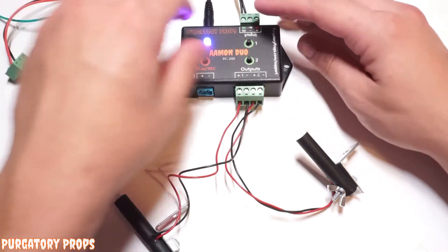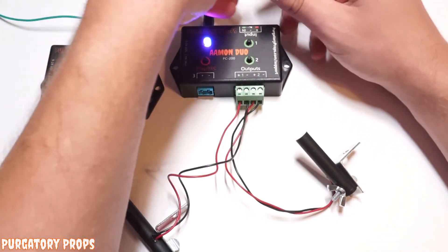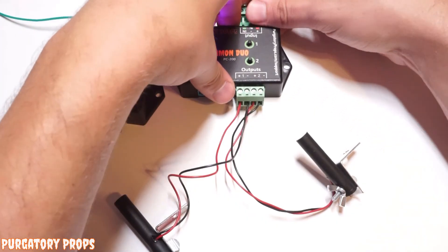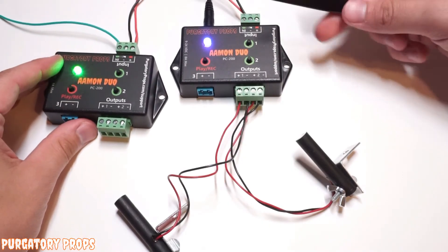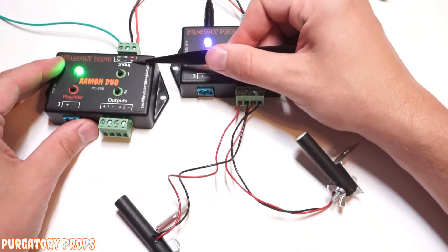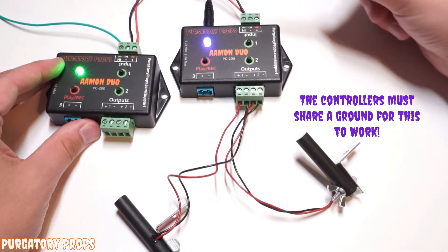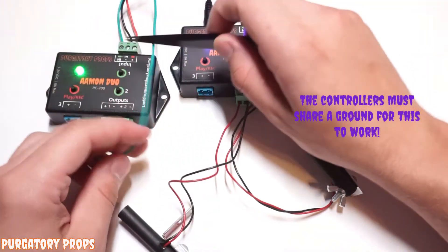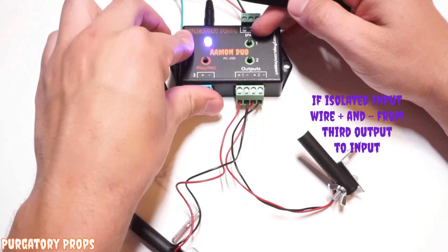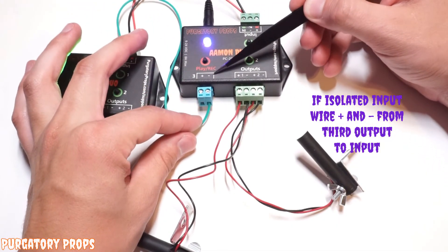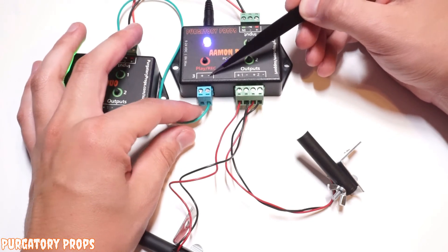And now the third output will turn on for one second after the animation is done recording or done playing. So let's change this configuration up. So what we're going to do is we're actually going to power this second Amon Duo off of this first one. So we're using the input terminals for power on this second one, and we're just positive to positive, negative to negative. Then the IN on this second one, we're going to wire it up to the negative of the third output. That's important because this won't work if you wire it to the positive. It has to be to the negative.